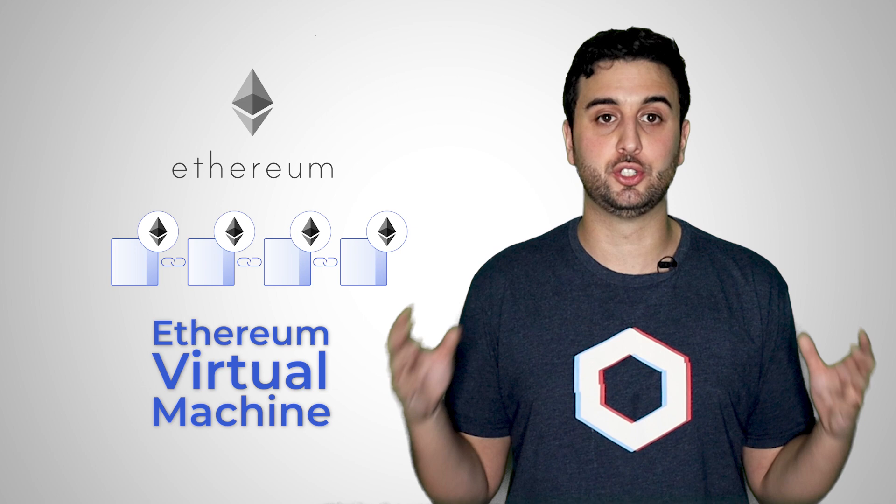You can find a link to the Ethereum whitepaper in the description below. He named the blockchain Ethereum and called the virtual machine the Ethereum Virtual Machine, or EVM. Vitalik referred to the code stored on Ethereum and run by the EVM as smart contracts.